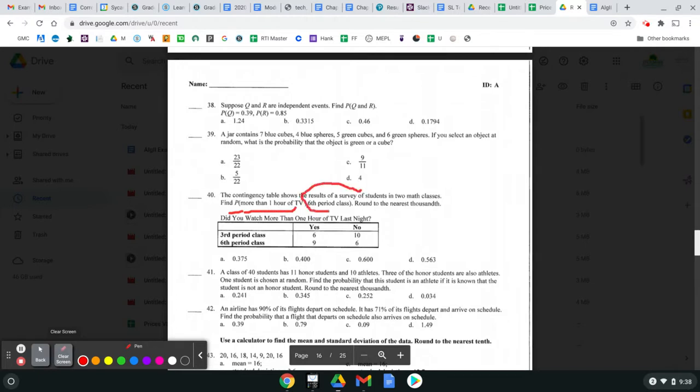given they are in the sixth period class? So the bottom of this is going to be the sixth period. And the top is going to be more than one hour of TV.